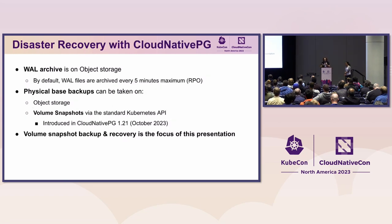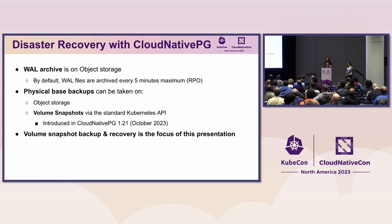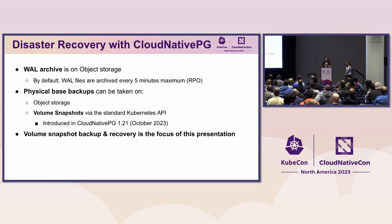Cloud Native PG stores WAL archives in an object store, and out of the box WAL files are archived maximum every five minutes — this is your worst-case scenario for RPO. Physical-based backups can be taken in two ways: using object stores, or using volume snapshots through the new support for the standard Kubernetes API. When dealing with large databases, volume snapshots emerge as the preferred choice for streamlined backup and recovery.